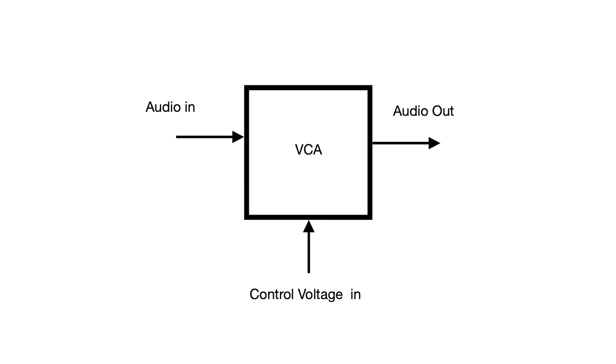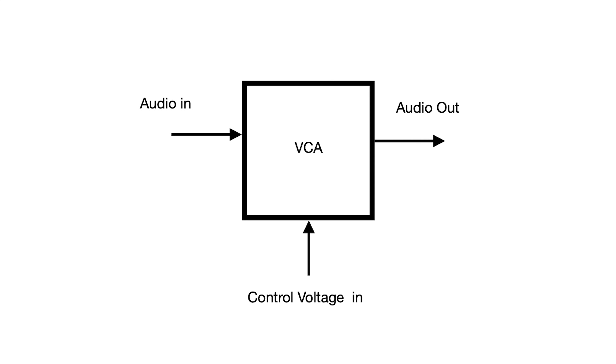With synthesizers, VCA literally means an amplifier whose gain is set by an external control voltage. You route the audio signal created in the synthesizer through the VCA and also send a control voltage into the VCA from another module, usually an envelope generator of some sort, and the VCA sets its output level based on that incoming control voltage. So we've got signal, we've got control, and that gives us our output level.